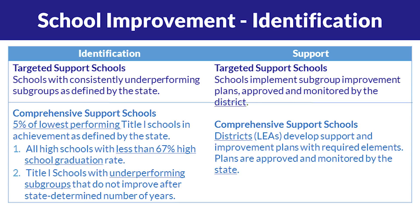Comprehensive support schools, on the other hand, are the lowest performing Title I schools — high schools that have less than 67% of their students graduating, and targeted support schools that were not able to exit that status within six years. Any school with that comprehensive support school designation has to put together an improvement plan that is approved by the state.